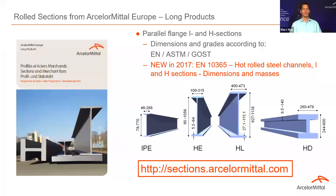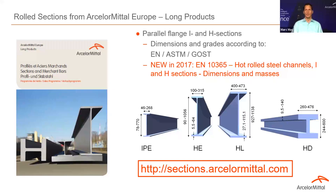All our section sizes are found in our rolling and sales program. You find all I, H, and channel sections available in grades and dimensions according to Euronorm EN, American Standard ASTM, and Russian Standard GOST. Since 2017, there is the dimension standard EN 10365 for hot-rolled steel I and H sections and channels. The main families produced in Europe are IPE — the slender ones — HE wide flange beams, very high wide flange beams HL, and HD column sections.